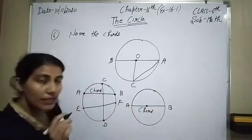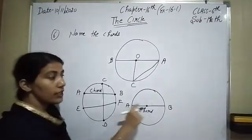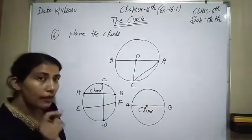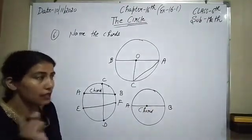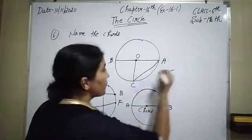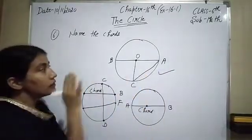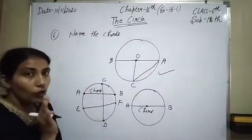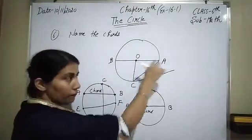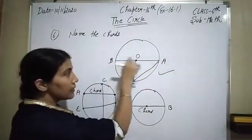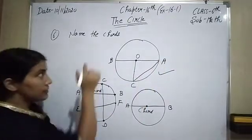The diameter is the longest chord of a circle. Now look at this figure — we have to find out the name of the chords. AB is a chord because it is connected with two points on the circumference.